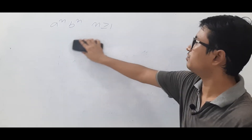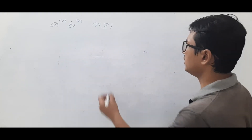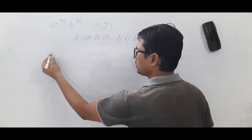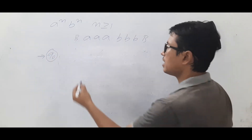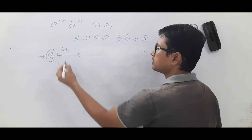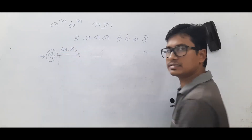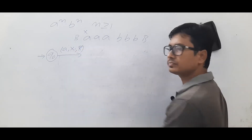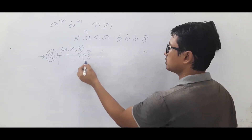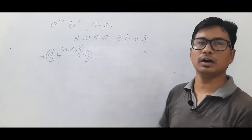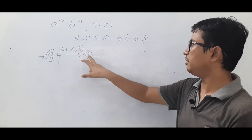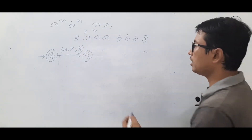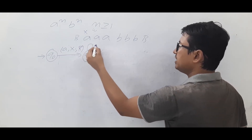Now let's trace the Turing machine on the input AAABBB with blanks. We start in state Q0. The tape head sees A, so we mark it as X, move right, and transition to state Q1. The tape head is now pointing to the next symbol.